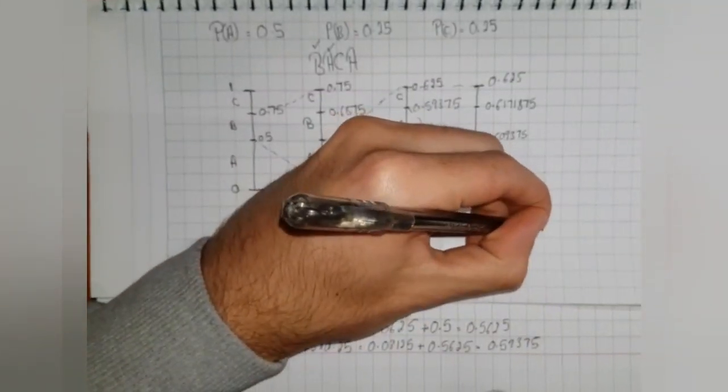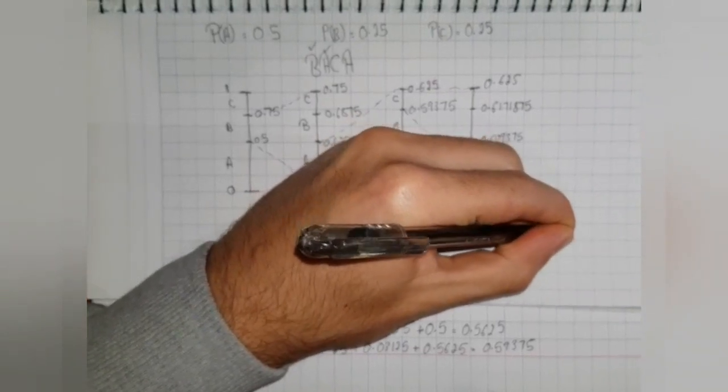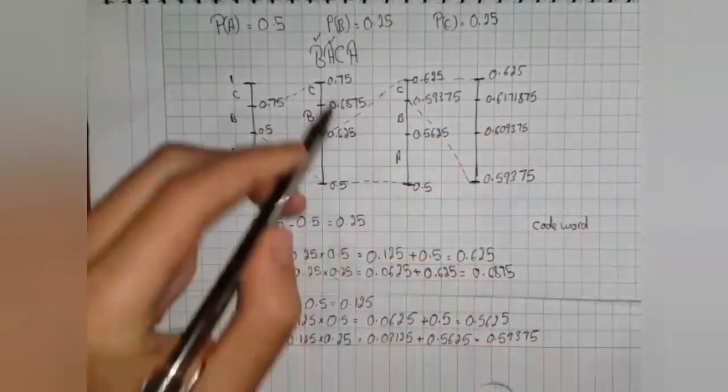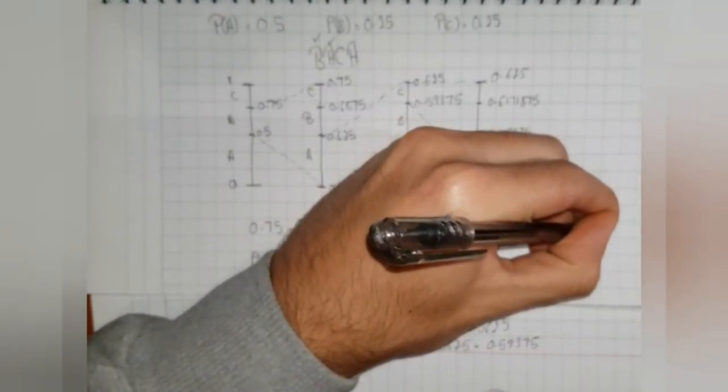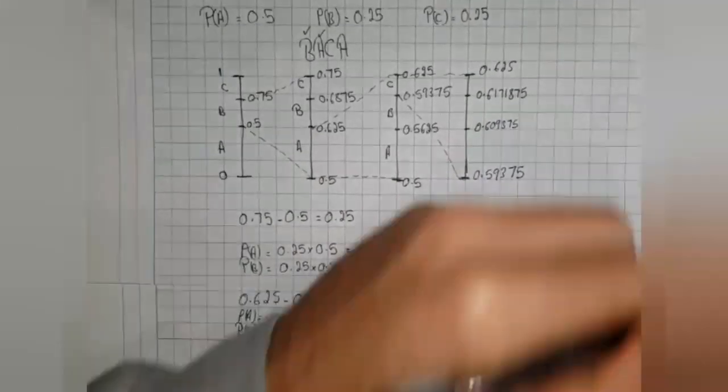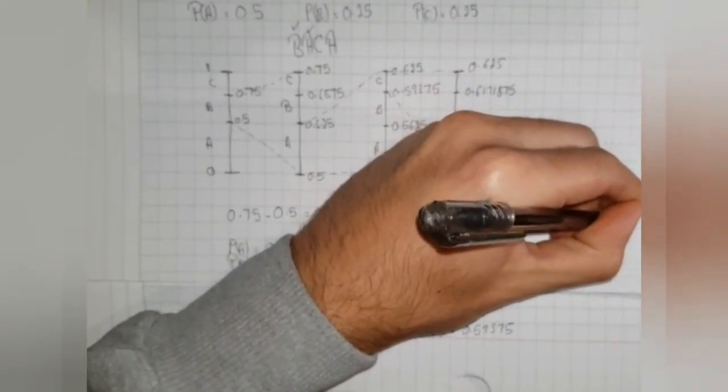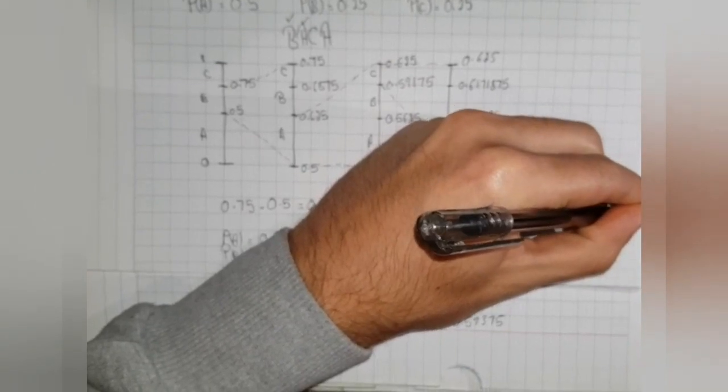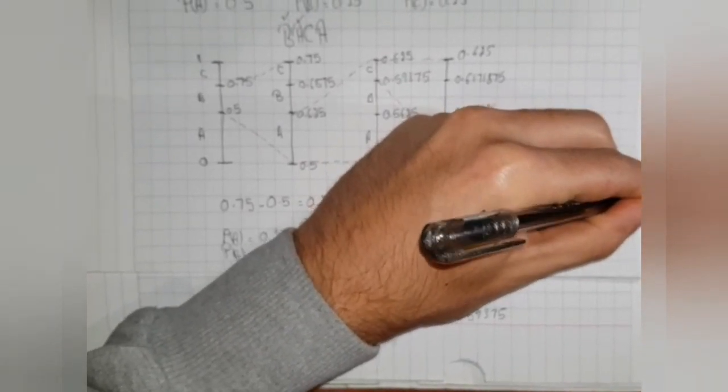We conclude that our finalized codeword for the symbol B, A, C will be 0.59375.